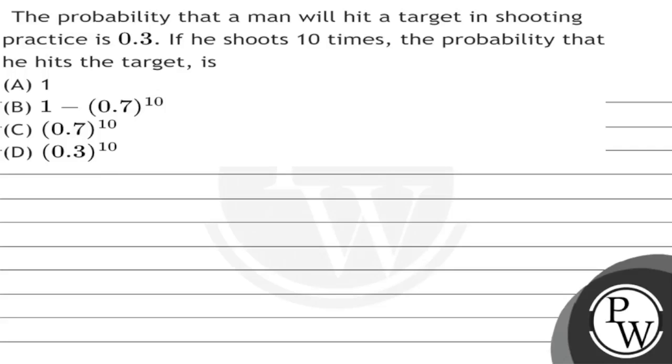Hello, let's see this question. The question says that the probability that a man will hit a target in shooting practice is 0.3.